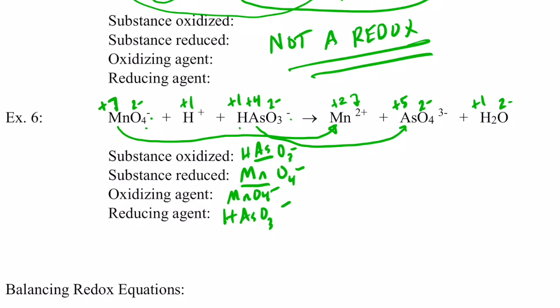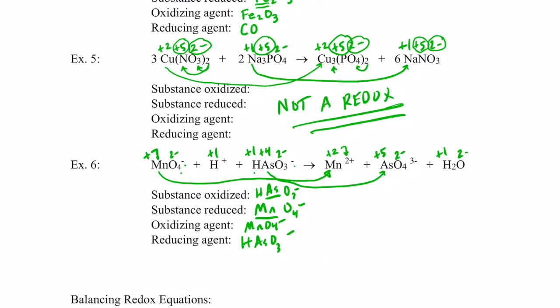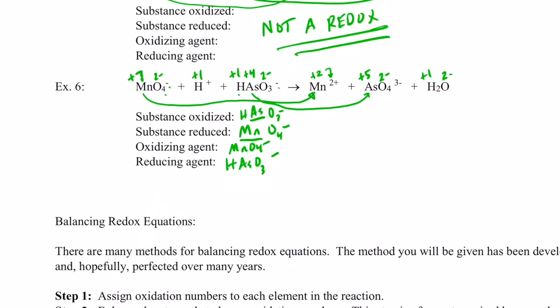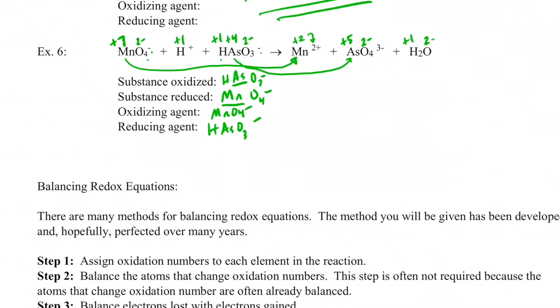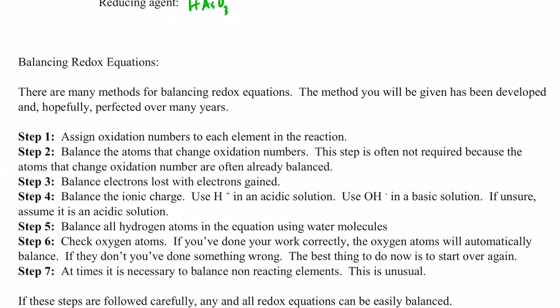That was a nice review of vocabulary terms as well as determining oxidation numbers — hopefully that was helpful. Next time we'll learn how to balance redox reactions. This happens to be a very difficult concept for some students, but I've found a pretty simple way to do it and I'll be teaching that in the next video. See you soon.